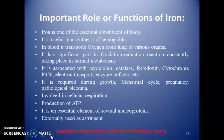The normal hemoglobin levels in human beings are: in newborns, 17 to 22 g/dL; in children, 11 to 13 g/dL; in adult males, 14 to 18 g/dL; and in adult women, 12 to 16 g/dL. If the hemoglobin level decreases below normal, the patient may suffer from anemia. For treatment, iron preparations are administered. Iron may be given as a therapeutic dose or a prophylactic dose.